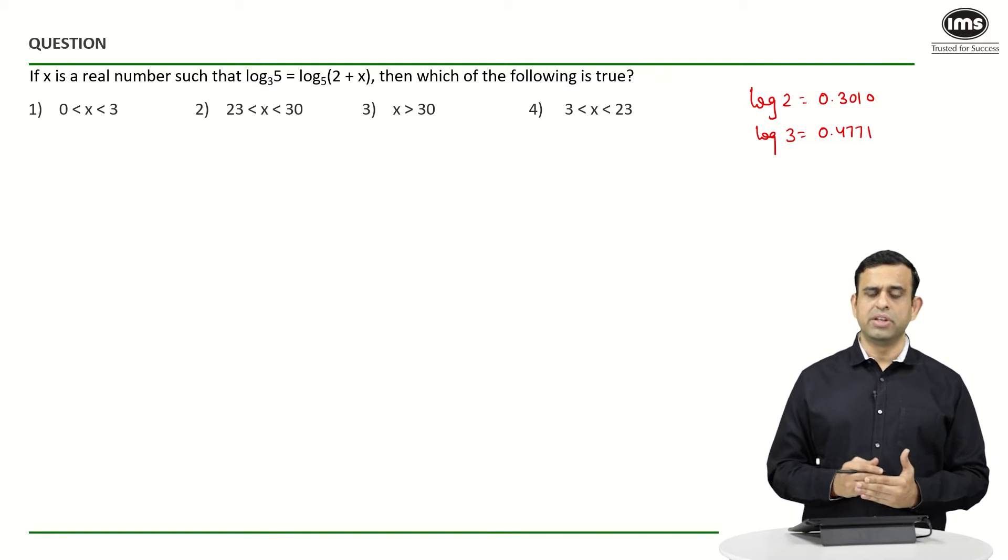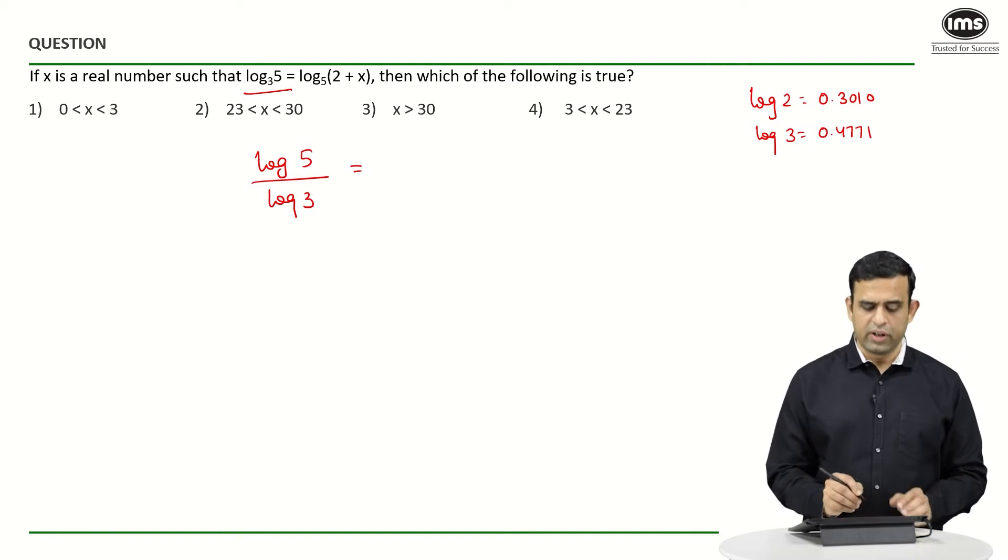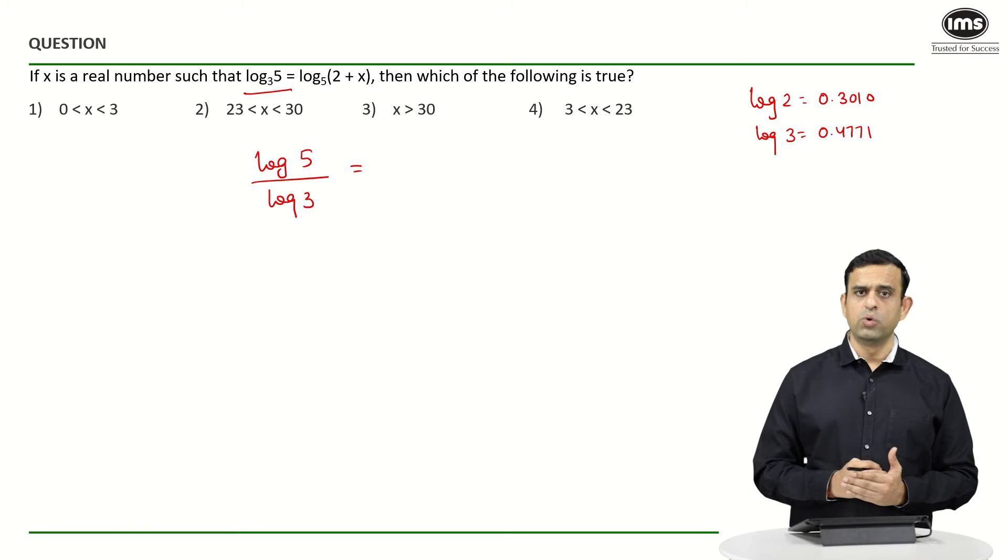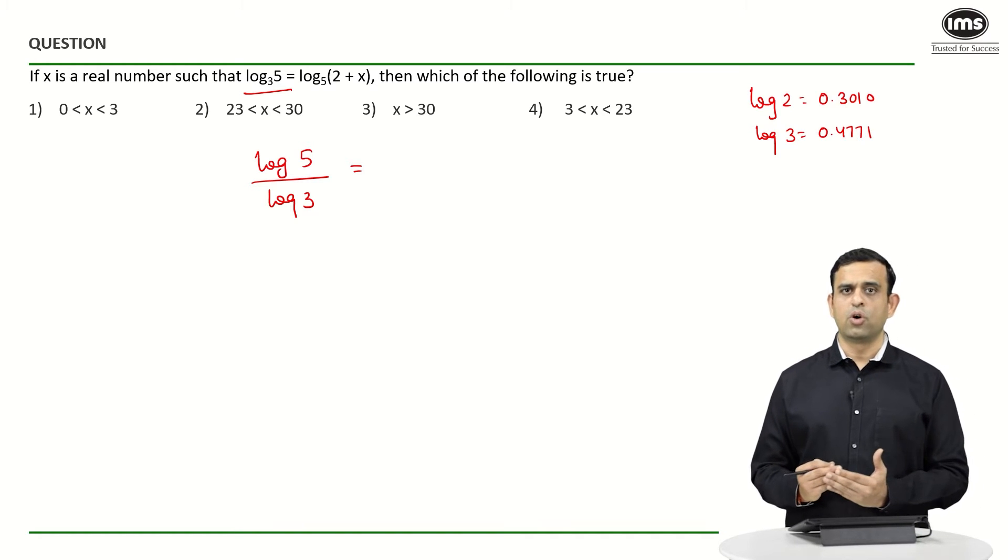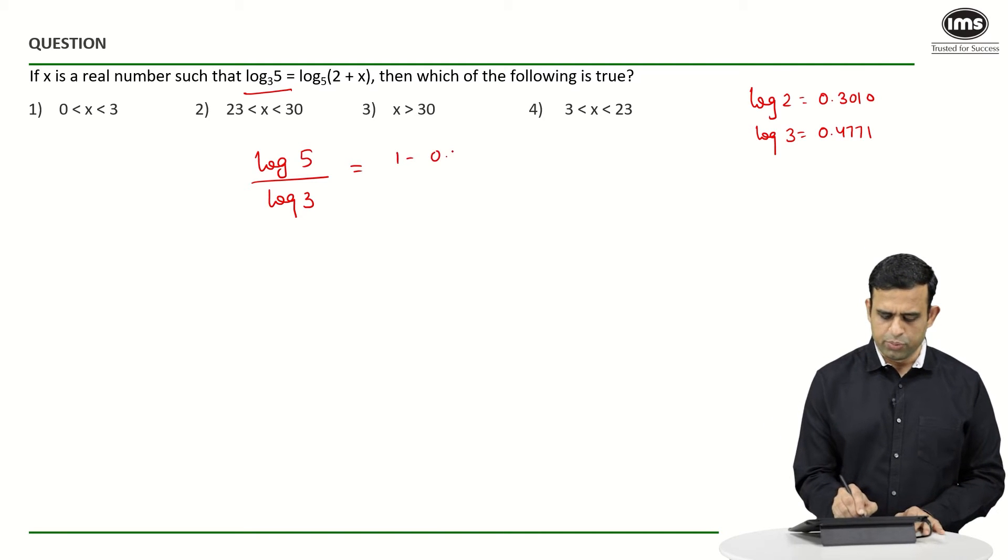But this part, if I look at, one can find as log 5 divided by log 3. And log 5 basically one can write as log (10/2), which is log 10 minus log 2. So log 10 happens to be 1, so 1 minus 0.3010 upon 0.4771.